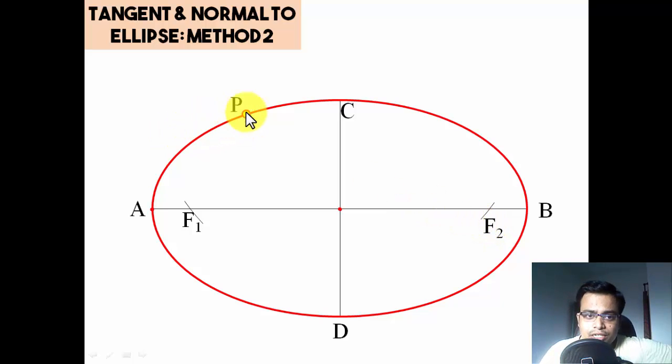Let's just say we want to have a tangent and a normal at point P. So what should we do? Let's join P with F1 and F2. Here we go. So if you watch carefully, we have an angle. What is that angle? If you watch carefully, this is angle F1-P-F2.